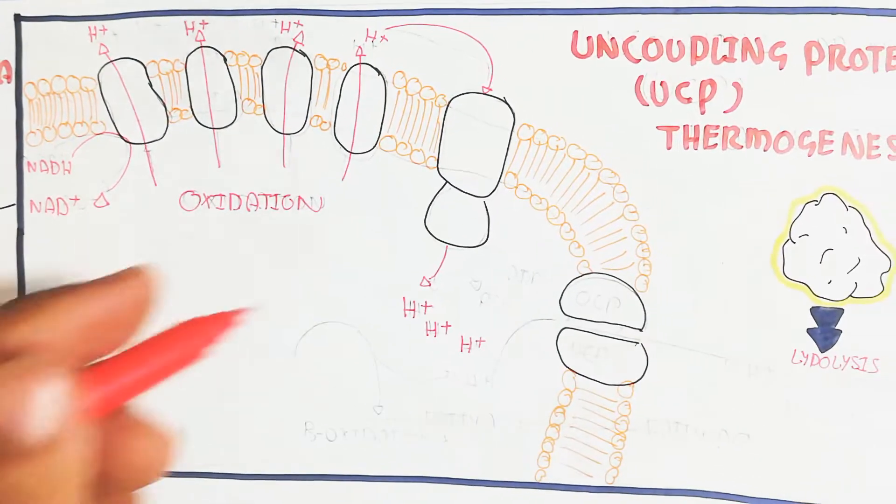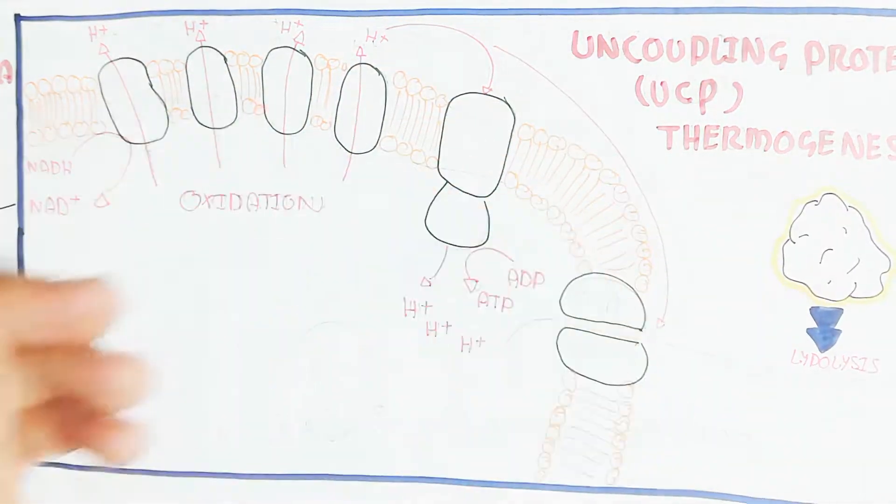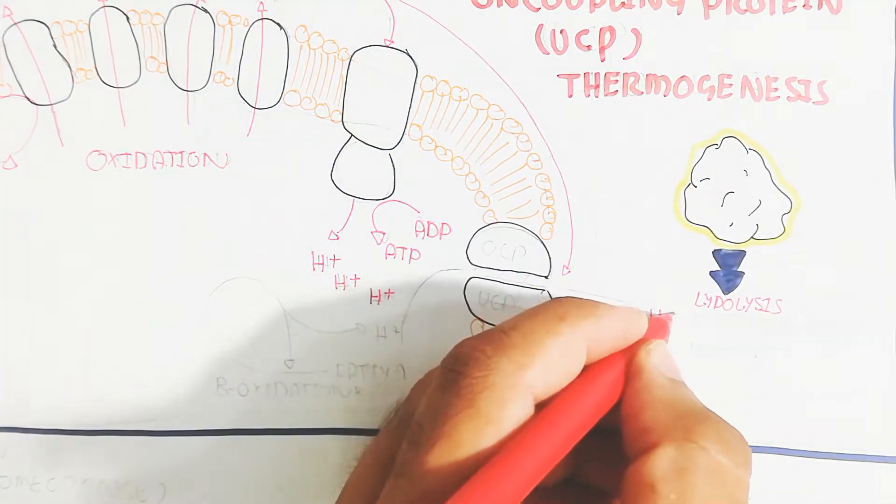So here is the ATP synthase enzyme used to produce ATP from ADP. This is the normal mechanism we are going to understand.